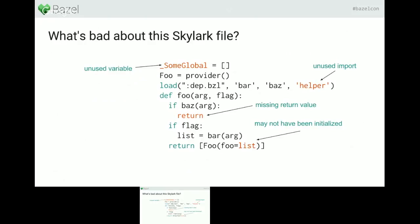Some more complex examples: a variable that starts with an underscore is private and not exported. If it's never used in that file, it's useless and the linter reports this. Also, in the load statement, if we're loading a function that's never used in that file, the linter warns about it too.